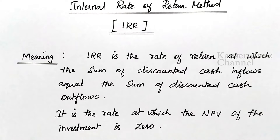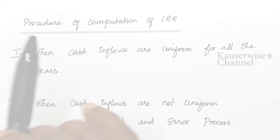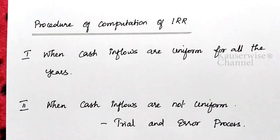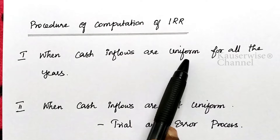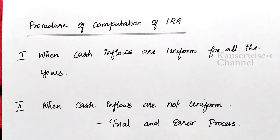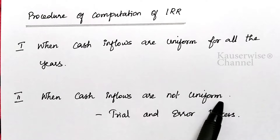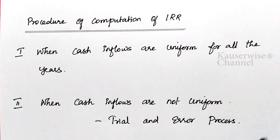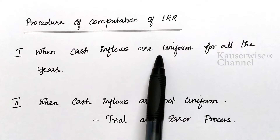The next topic is the procedure for computation of IRR. There are two different methods. The first is when cash inflows are uniform for all the years — in that case there is a simple formula to find the IRR. The second is when cash inflows are not uniform — in that case you follow a trial and error procedure. We will see both one by one along with problems.